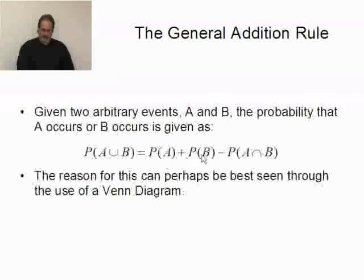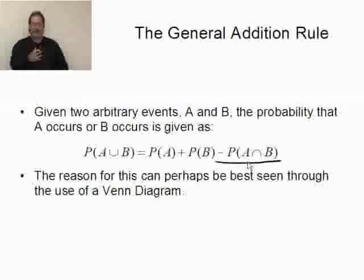It equals the probability of A plus the probability of B minus the probability of A and B. So the probability of A or B equals the sum of the individual probabilities minus the joint probability.